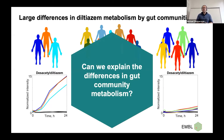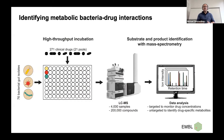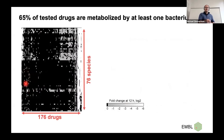This brings up the question: can we explain those differences in gut community metabolism at the molecular level? To do so, we chose a bottom-up approach where we took 271 clinical drugs and incubated those with 76 bacterial isolates from the human gut under anaerobic conditions. We used high-throughput metabolomics to measure whether drugs get metabolized by those bacterial isolates. Strikingly, we found that two-thirds of the tested drugs got metabolized by at least one of the bacteria, summarized in this heat map with 76 species on the y-axis, 176 metabolized drugs on the x-axis, and each square representing an interaction — the brighter the square, the stronger a species metabolizes a given drug.